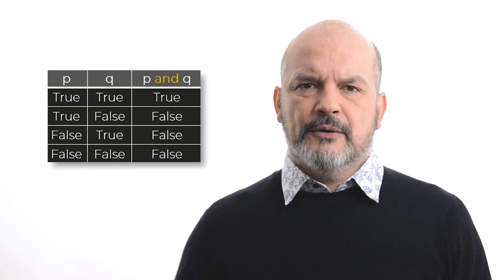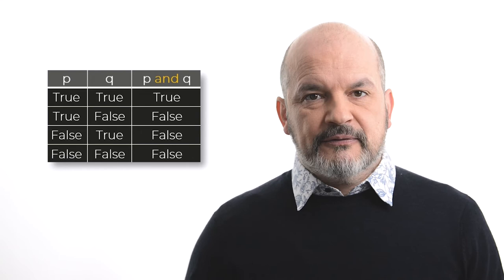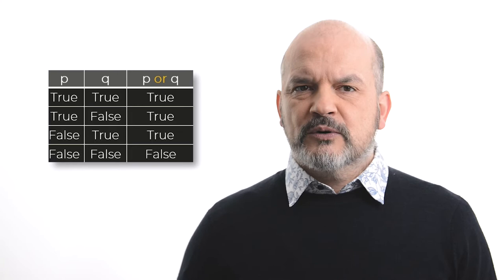The AND operator returns a true value if and only if both operands are true, false otherwise. On the other hand, the OR operator returns false if and only if both operands are false, true otherwise.